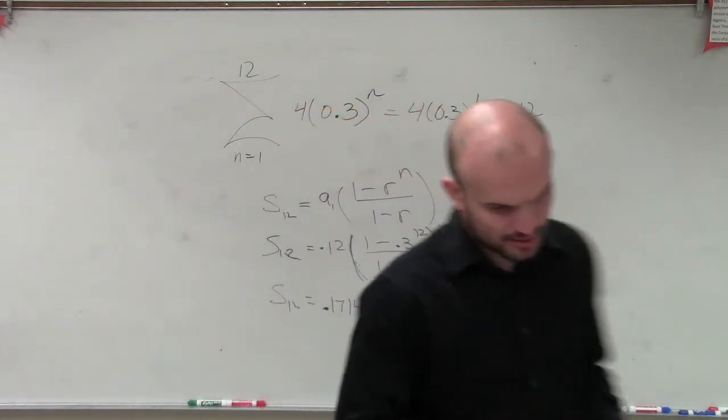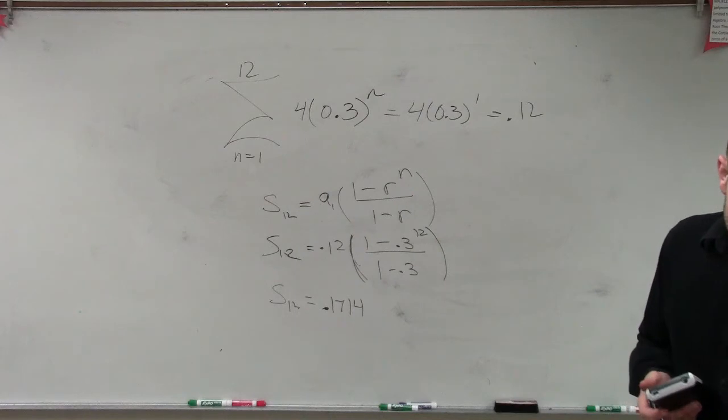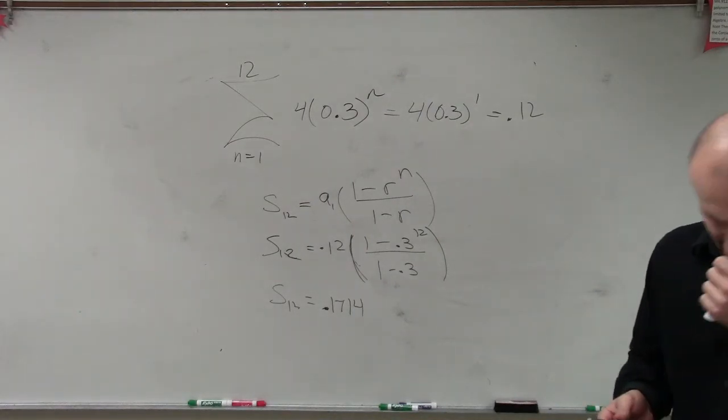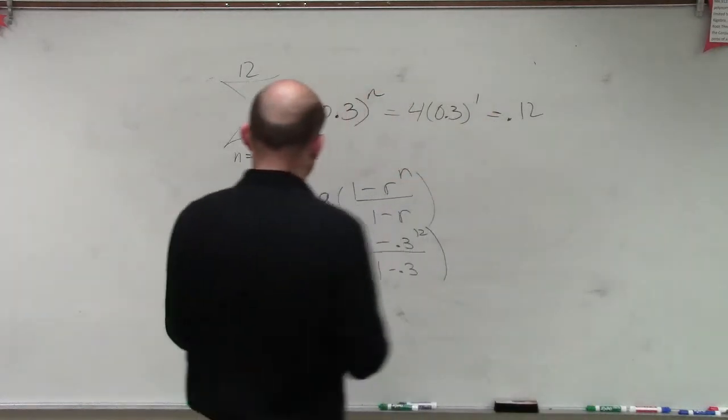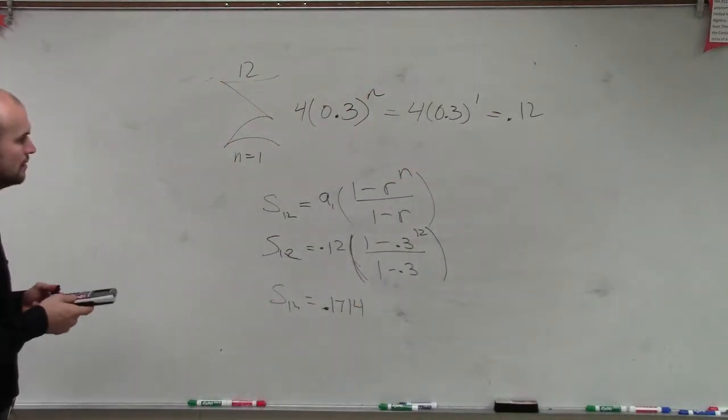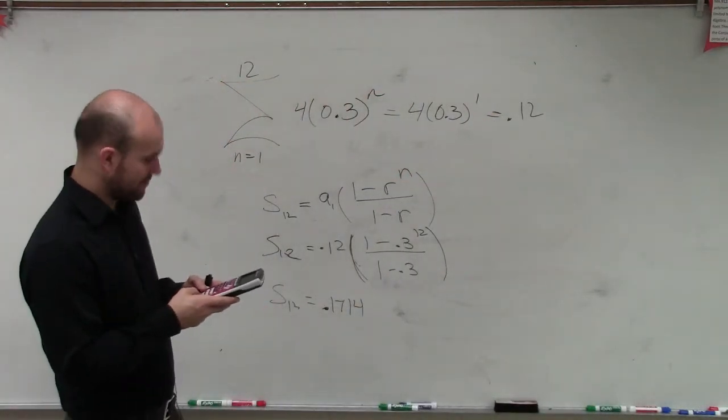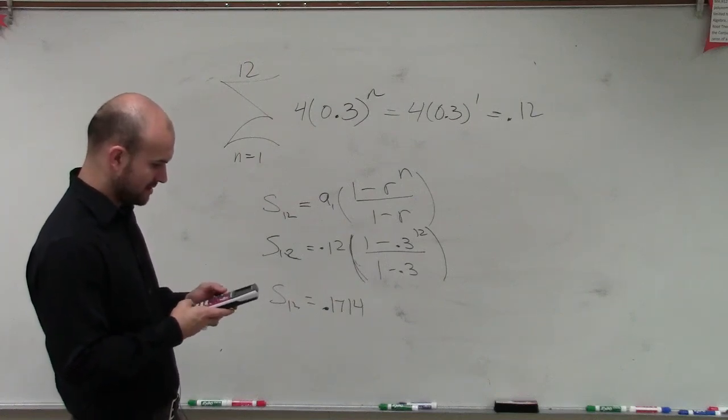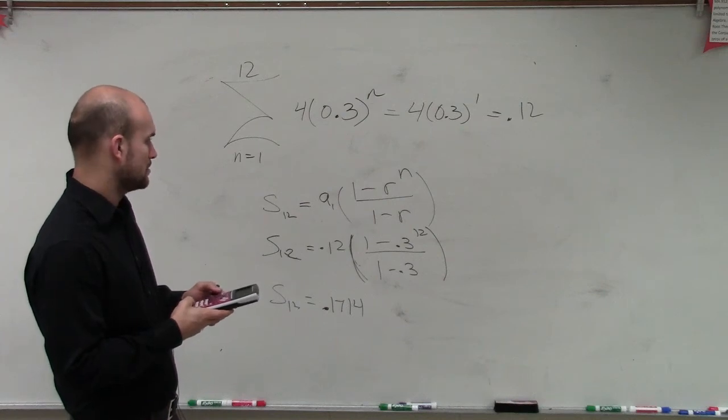And then I'll check my work. That is correct. Oh, I got 1.7, yeah. Where did I go? Let me just double check it. So I had 0.3 raised to the 12th. I did something wrong. 1 minus second answer. You got 0.182?